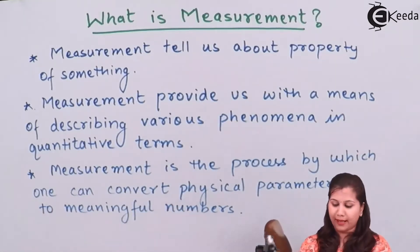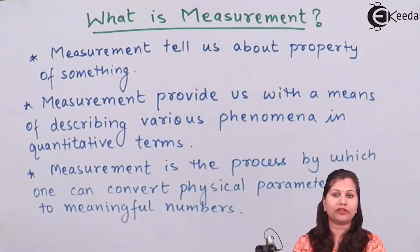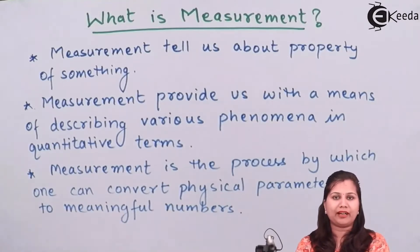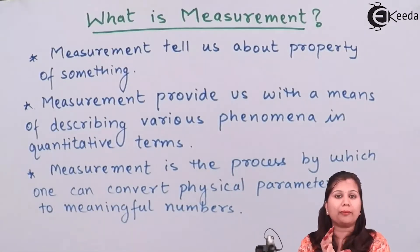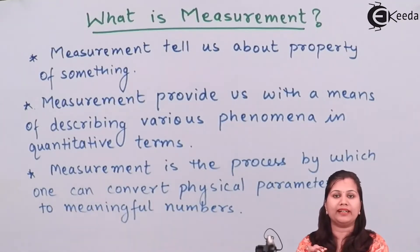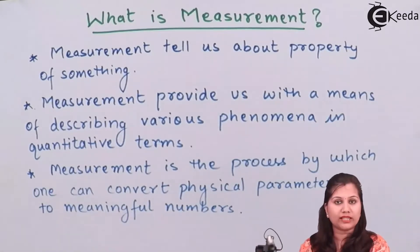Measurement is the process by which one can convert physical parameters to meaningful numbers. If we want to find out how much water is contained in a glass, we could give a rough approximation. But if we want to actually find out, we say 200 ml of water is there. That quantity — 200 ml — is called the measurement. We are converting physical parameters into meaningful numbers through measurement.